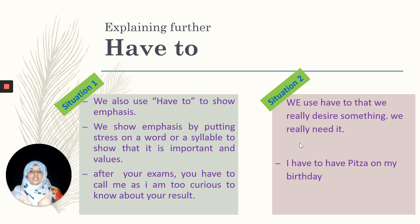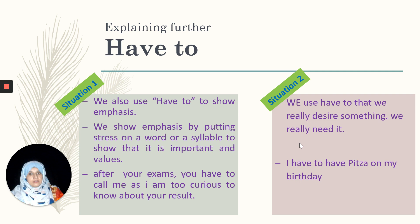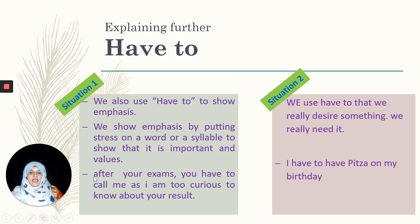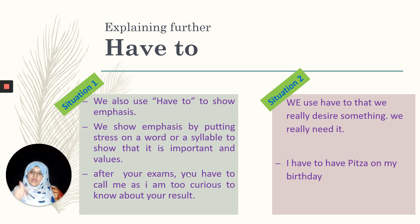There are two more situations in which we can use 'have to.' First, we use 'have to' to show emphasis — when we want to stress upon a certain expression to show that it is important. For example: after your exams, you have to call me as I am too curious to know about your result. Here we emphasize 'have to call me' by stressing that word.